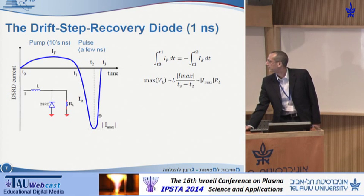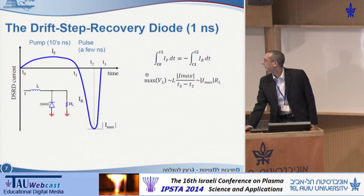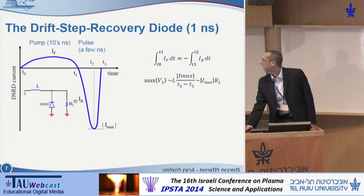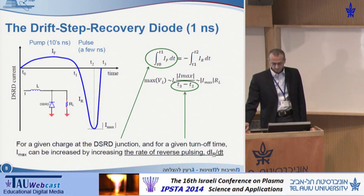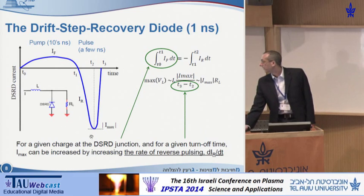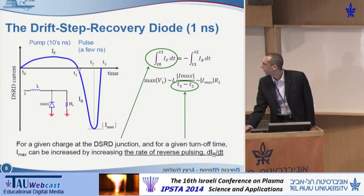The nanosecond current cutoff time is between T3 and T2. The maximum voltage on the load is L·di/dt, which equals L times I-max divided by the cutting time, and also equals the maximum current times the load value. For a given charge at the DSRD junction and a given turnoff time, the maximum current can be increased by increasing the rate of reverse pulsing (di-reversed/dt), allowing a higher negative current peak while maintaining the same charge integral.